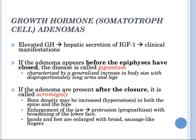Persistent elevation of growth hormone stimulates secretion of insulin-like growth factors (IGF-1) by the liver, causing many of the clinical manifestations. If a somatotrope adenoma appears in children before the epiphyses have closed, the elevated levels of growth hormone and IGF-1 result in gigantism — characterized by a generalized increase in body size with disproportionately long arms and legs. If growth hormone is increased after closure of the epiphyses, acromegaly develops.